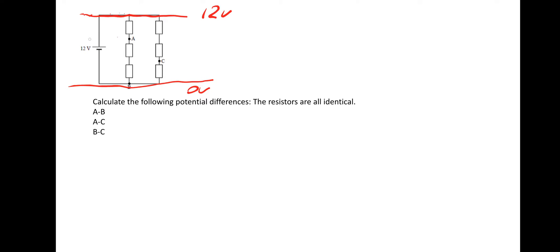Starting at 12 volts and dropping 4 volts across the first resistor gives a potential of 8 volts at that line. After the next resistor, another 4-volt drop gives 8 minus 4, so the next line has a potential of 4 volts. This technique makes the rest of the question straightforward.